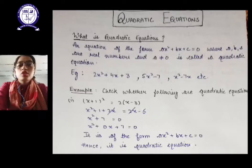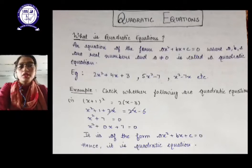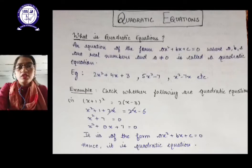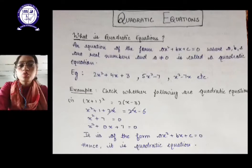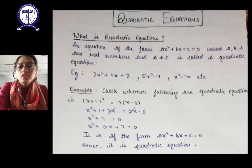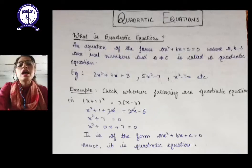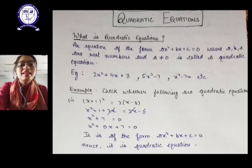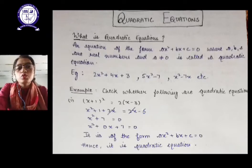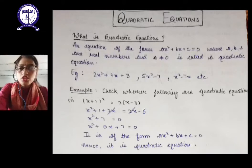We have all learned about the different types of polynomials: linear, quadratic, cubic, and biquadratic. Linear is of degree 1, quadratic is of degree 2, cubic is degree 3, and biquadratic is degree 4. For a quadratic equation, two things to always remember: first, the highest power must be 2, so degree must be 2. Second, a can never be 0, otherwise it becomes a linear equation.